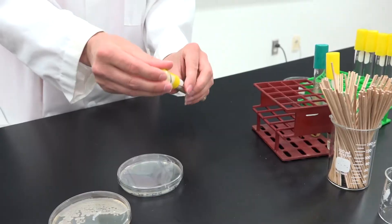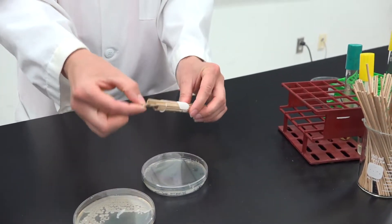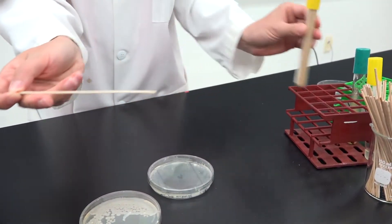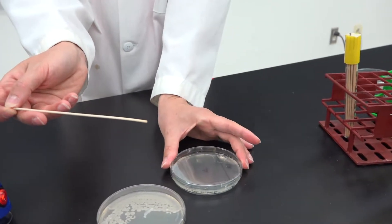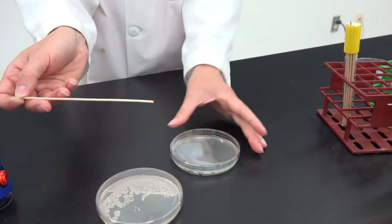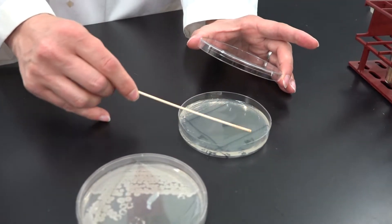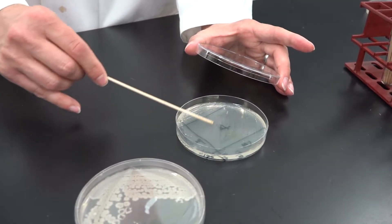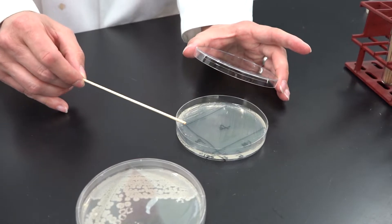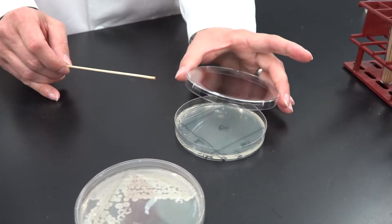Discard that stick and get a fourth and final stick from the tube. Rotate the plate 90 degrees again and take the bacteria from quadrant three and spread them in quadrant four. This time spread them out over the entire area without overlapping strokes. Do not touch quadrants one or two again.